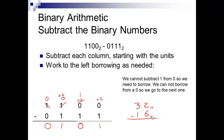To think about it like decimal: say we have 32 minus 16. We can't take 6 from 2, so we borrow. Normally we just put a 1 in front of the 2, making it 12 — what you're doing is adding 10, making it 12. So 12 minus 6 is 6, and 2 minus 1 is 1. In decimal it's easy to just add a 1 in front, but in binary we're adding 2, so it takes a little more effort.